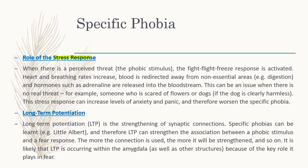When there is a perceived threat — the phobic stimulus, let's say a spider — the fight-flight-freeze response is activated: heart and breathing rate increase, blood is redirected away from non-essential areas, and hormones such as adrenaline are released into the bloodstream. This can be an issue when there is no real threat. For example, if you're only thinking about the spider and the fight-flight-freeze response is activated anyway, it causes problems because you have a full stress response with no real threat. The stress response can then increase levels of anxiety and panic and make the phobia worse.